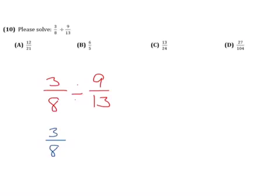We keep the first fraction the same and multiply by the reciprocal of 9/13. The reciprocal means we flip the fraction, so 13 over 9.